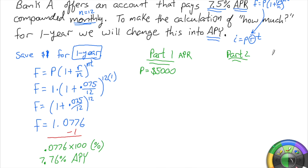APR over here, APY over here. The future value here would be the 5,000 times one plus 0.075 divided by 12 raised to the 12. Remember, we're only doing this for one year, so I don't need to write the one.